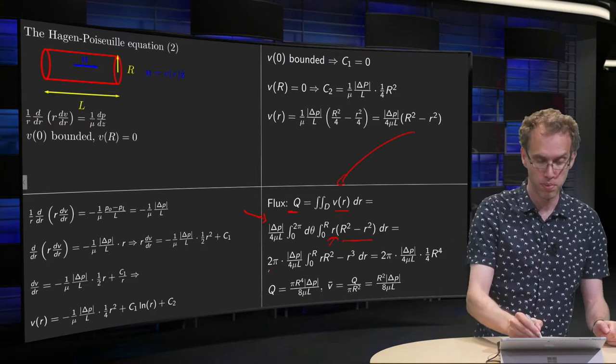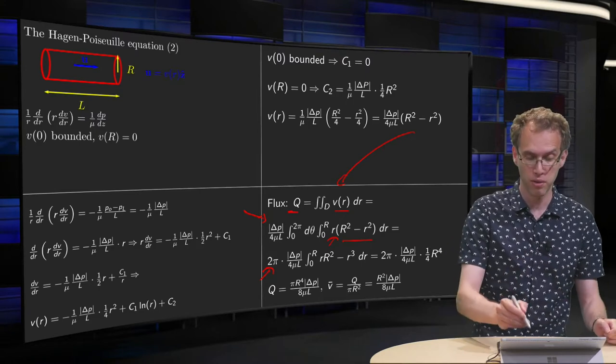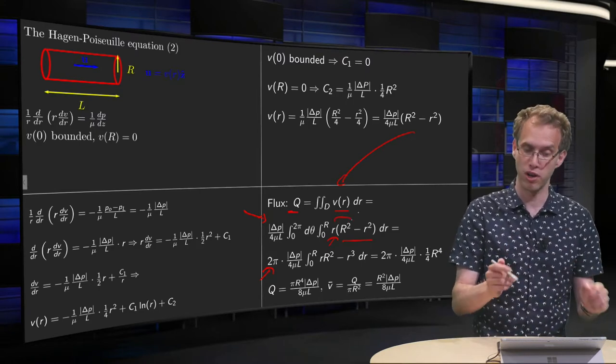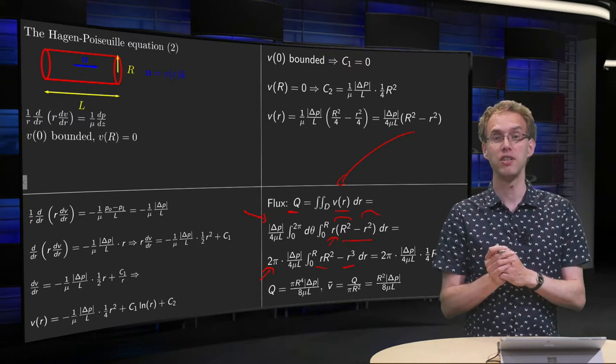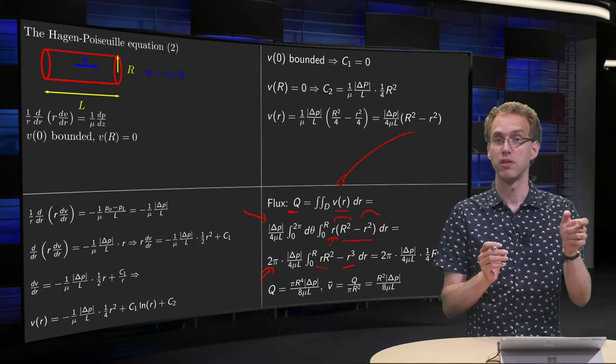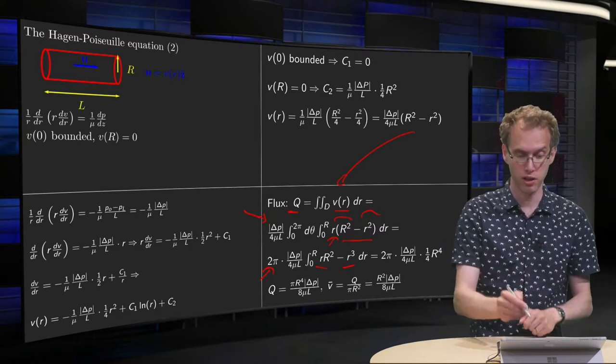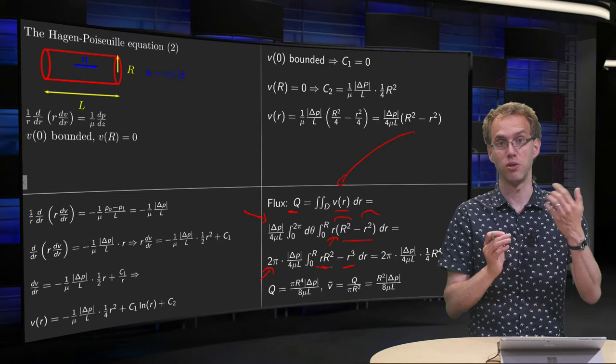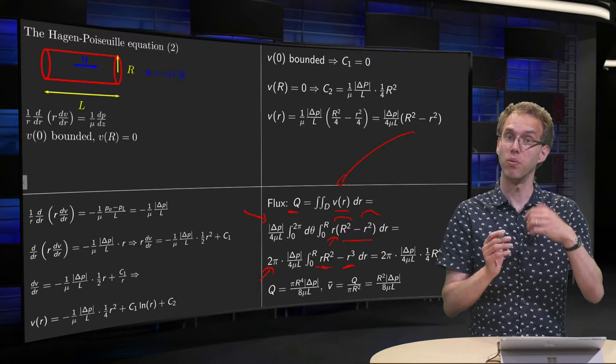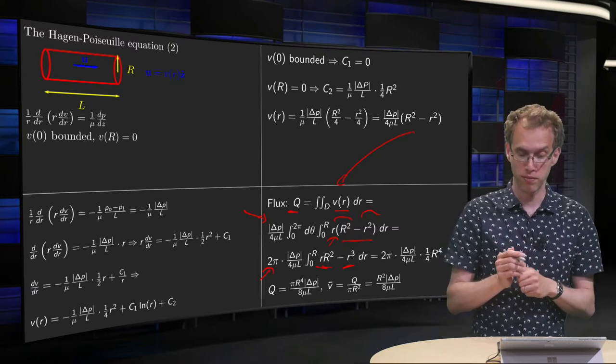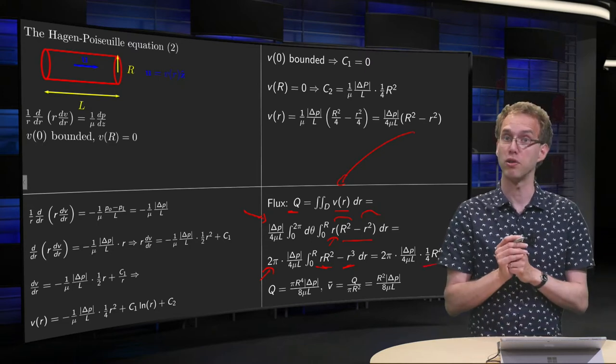The integration with respect to theta is trivial, that just gives you a factor 2 pi. And for the integration with respect to the small r, you have to be a bit careful. Multiply out, you get a small r times capital R squared, and here you get an r cubed. And if you now integrate, you get 1 half r squared. Plugging in the boundary values, you get 1 half capital R squared times capital R squared gives you 1 half R to the power 4. The other term gives you 1 quarter capital R to the power 4, so if you subtract those, you get 1 quarter times capital R to the power 4.